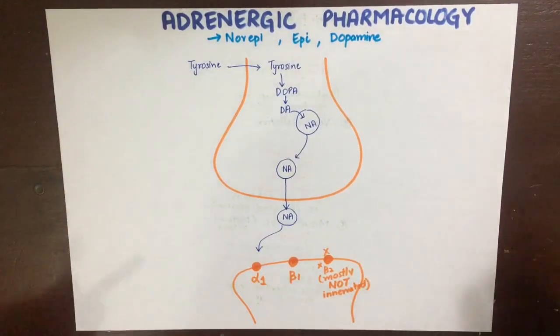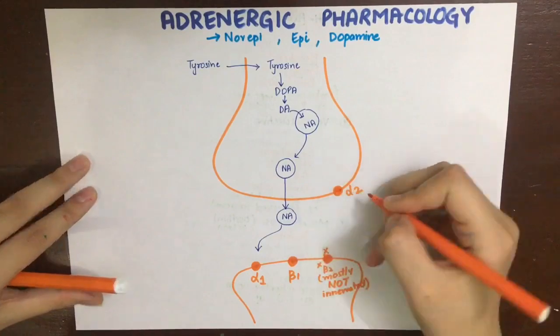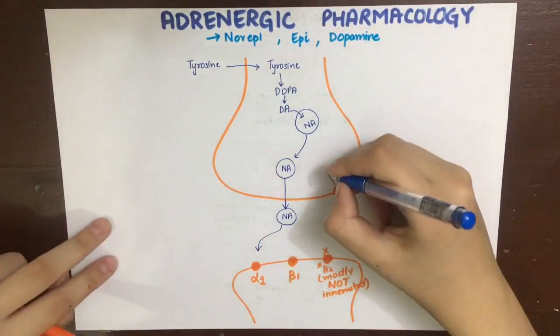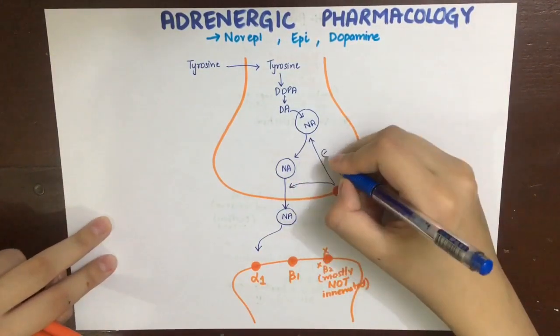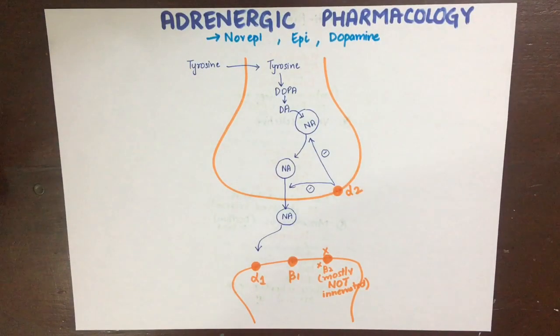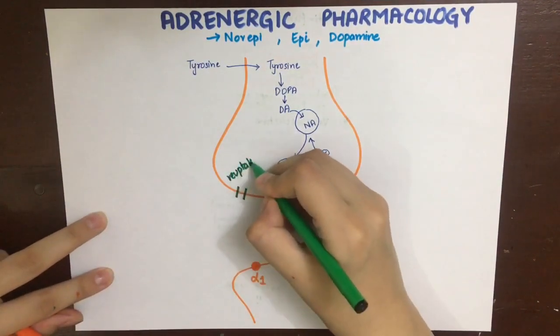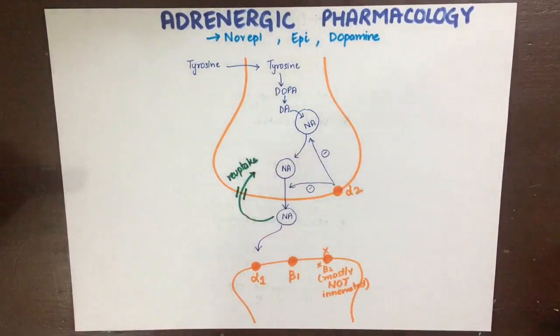The alpha-2 receptor is an autoreceptor. Its stimulation signals that there is too much norepinephrine in the synaptic cleft and that more should not be released. It therefore mediates negative feedback on noradrenaline synthesis and release.